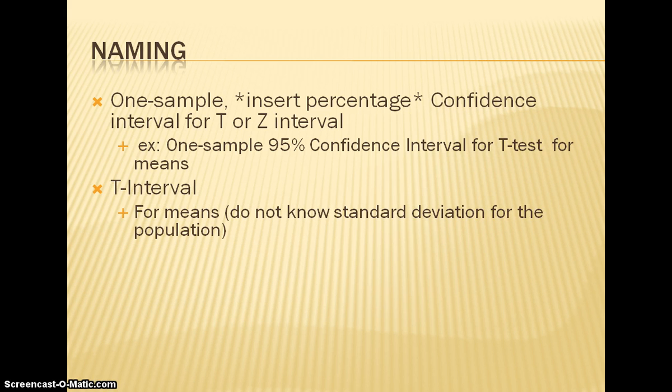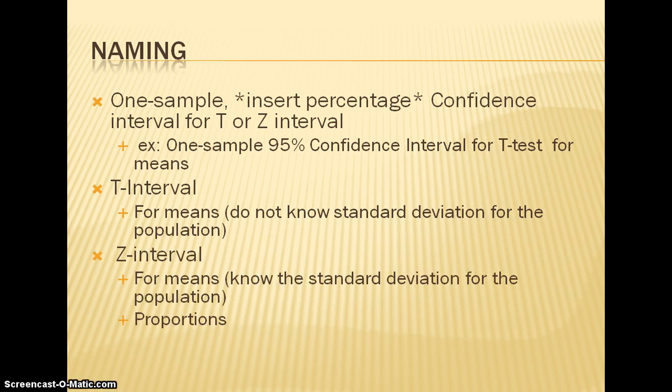For a t-test interval, it is only used for means and not for proportions. When you use a t-test interval, you are not given the standard deviation for the population. On the other hand, when you are using a z-test interval, it can be used for means or proportions. When you use it for means, you are given the standard deviation for the population.